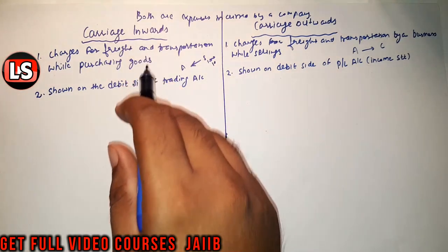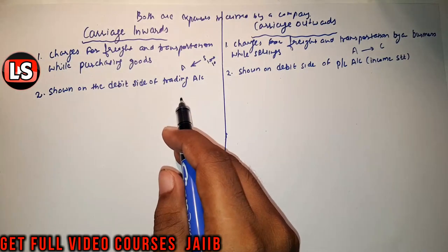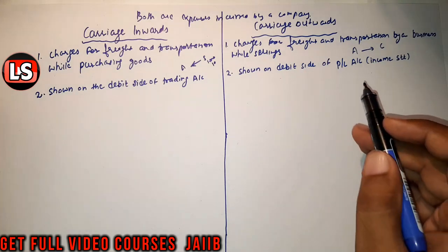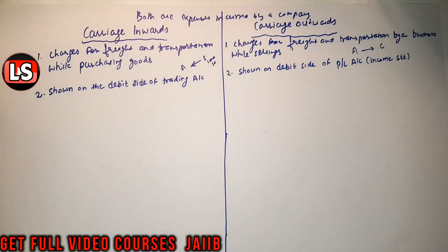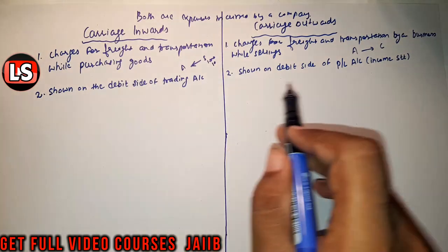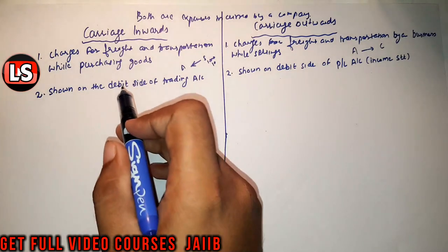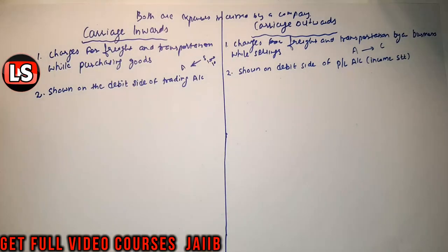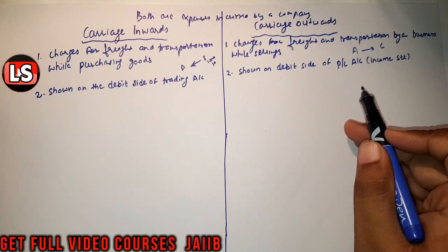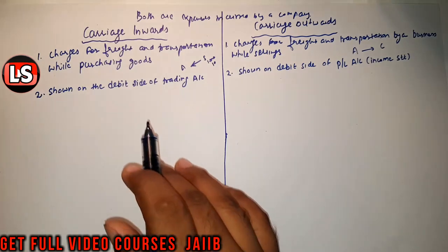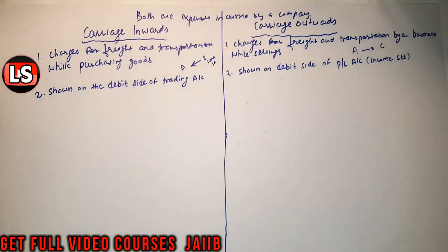So all direct revenues and direct expenses go into the trading account, and all operating and non-operating incomes or expenses go into the profit and loss account. Those are the major differences between the trading account and profit and loss account. So carriage inward is shown on the debit side of the trading account, whereas carriage outward comes on the debit side of the profit and loss account.